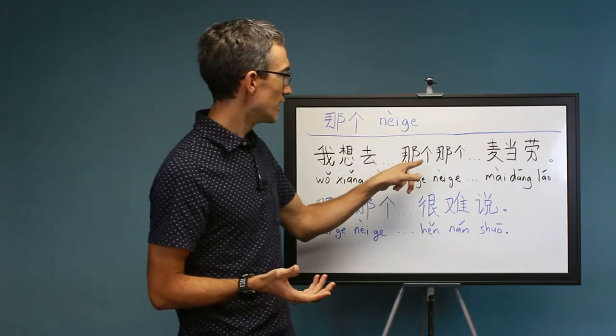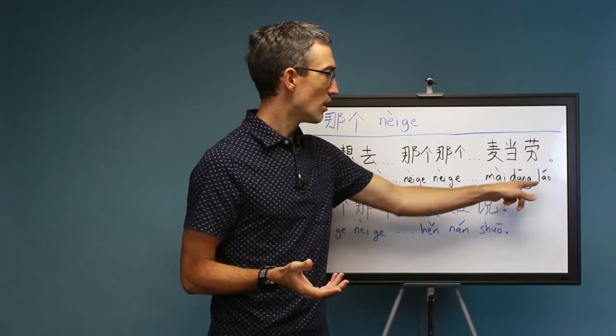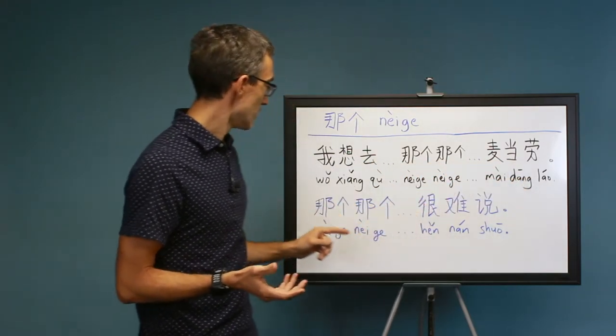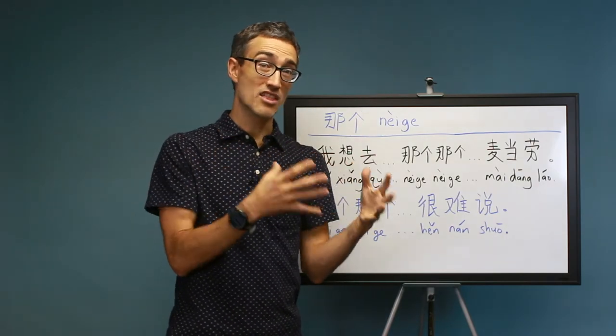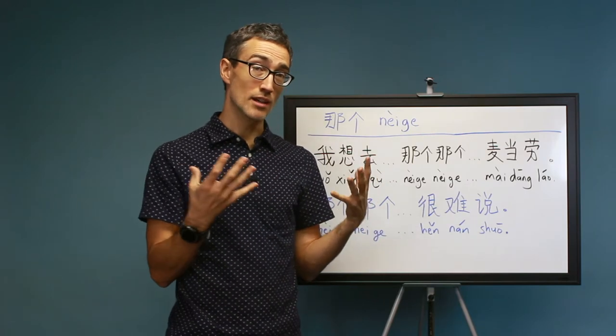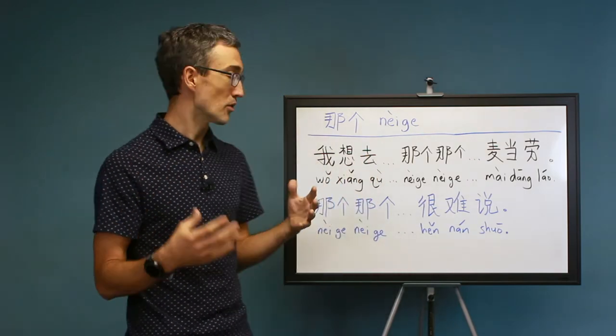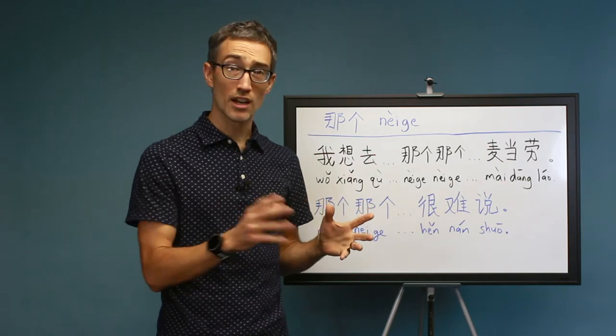Wo xiang qu, nega nega, mai dang lao. Mai dang lao means McDonald's, and wo xiang qu is I want to go. So the sentence is I want to go to McDonald's, but I can't think of the word McDonald's, so I'm pausing, saying nega nega as I'm trying to come up with it.